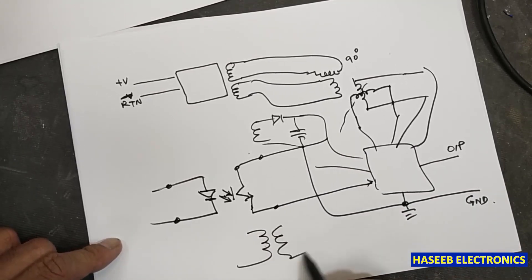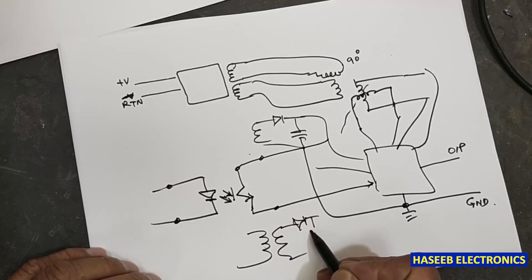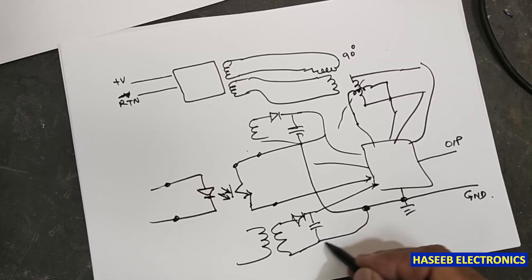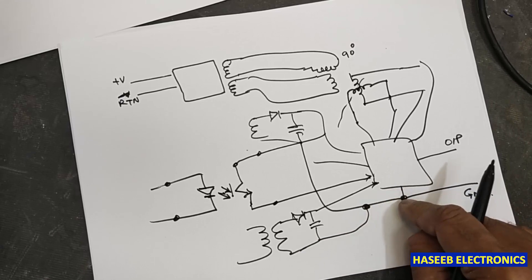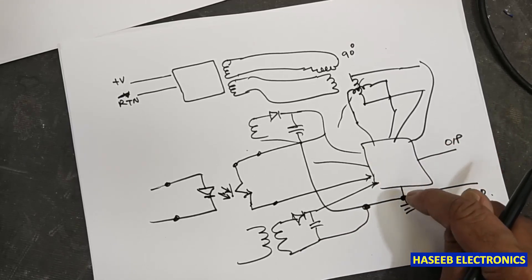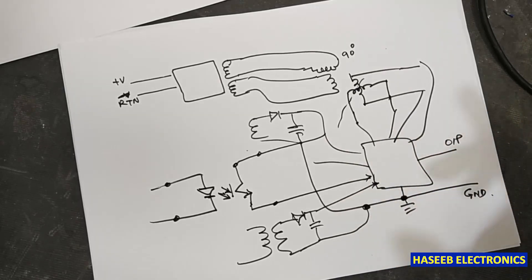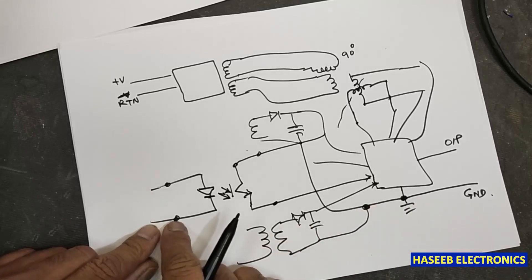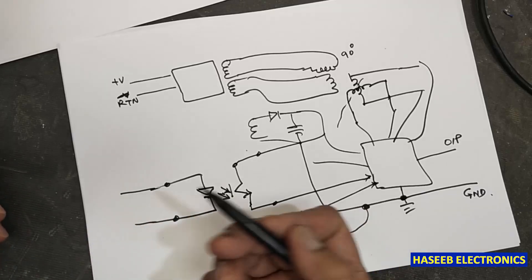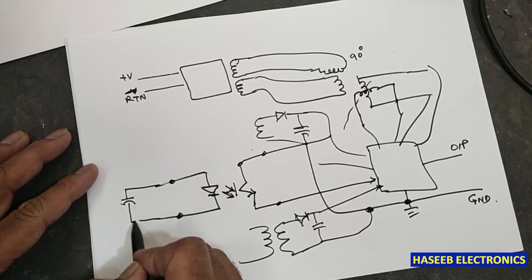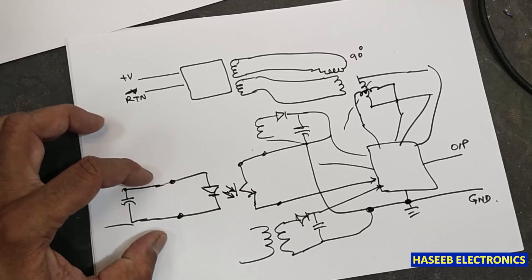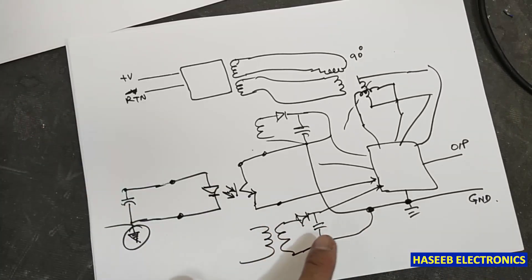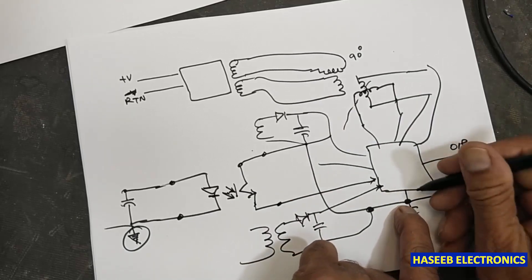If there is a transformer feedback or current signal connected to a processor, we follow the ground of that processor. When applying or taking any output signal, we need to follow the ground pin of that specific IC from where we are testing the signal. If we are testing a signal from a particular point, we use that circuit's own reference — not another circuit's reference.